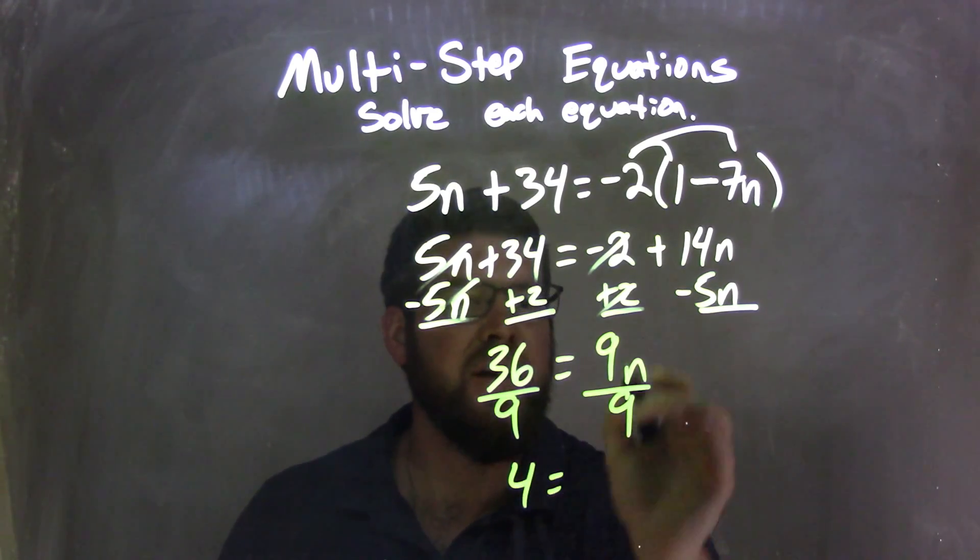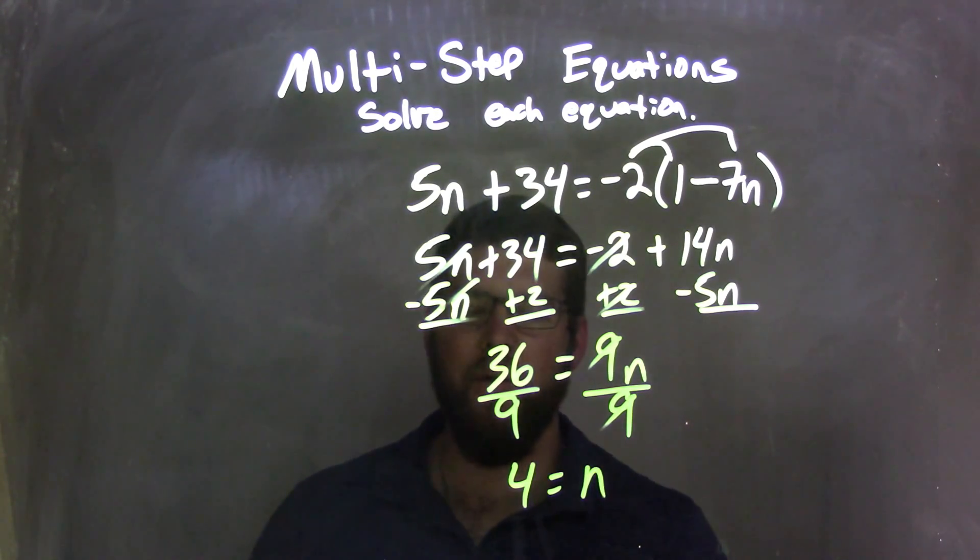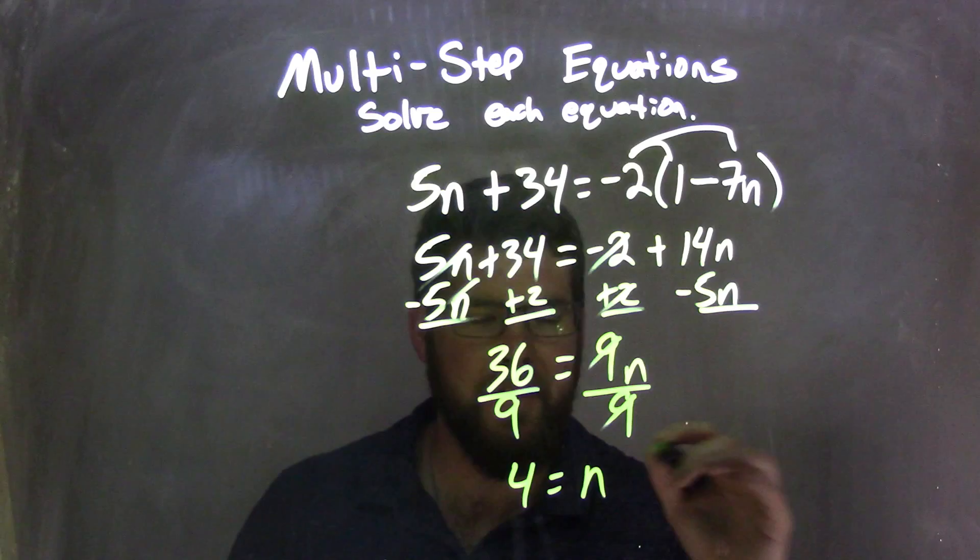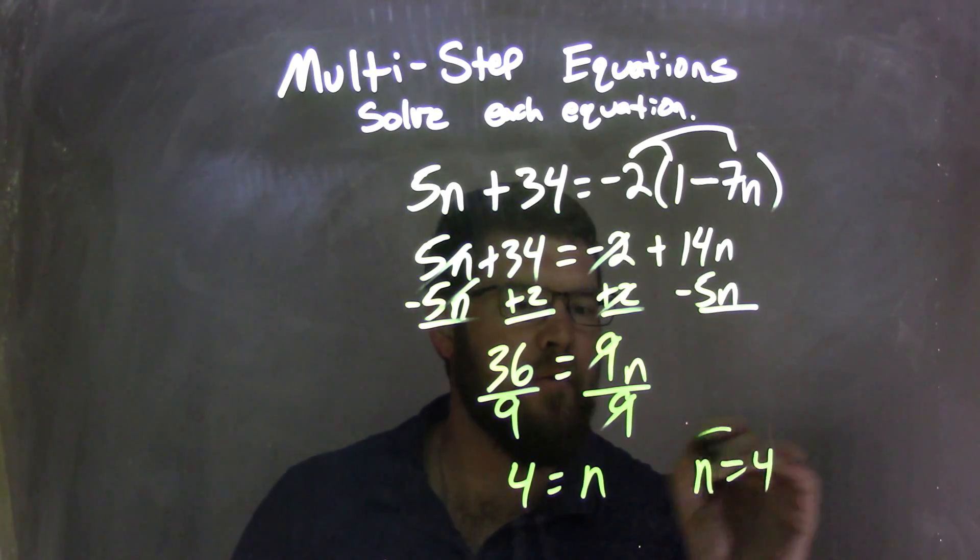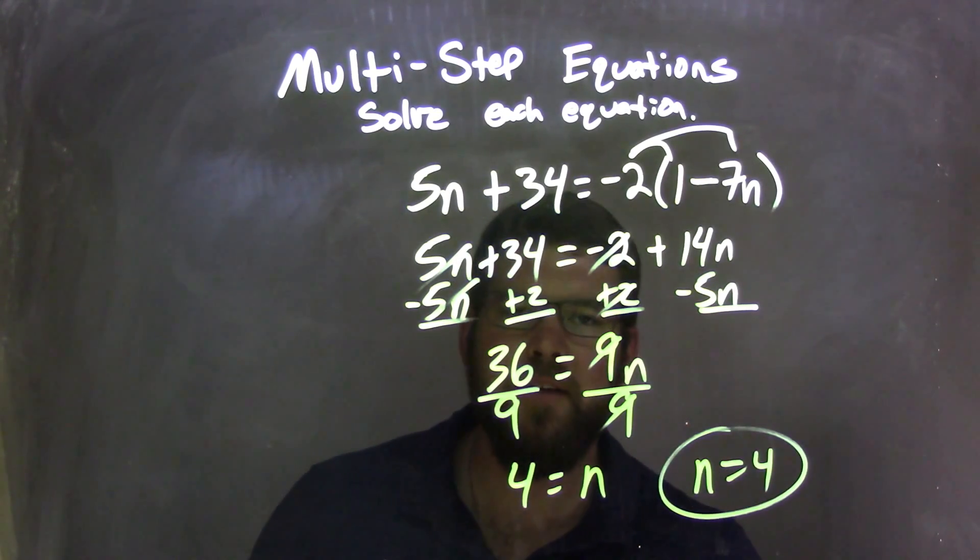9's cancel here, right? They divide out, leaving just n. So, we have 4 equals n. Let's rewrite that to make it look nice and neat. n equals 4, and that is my final answer.